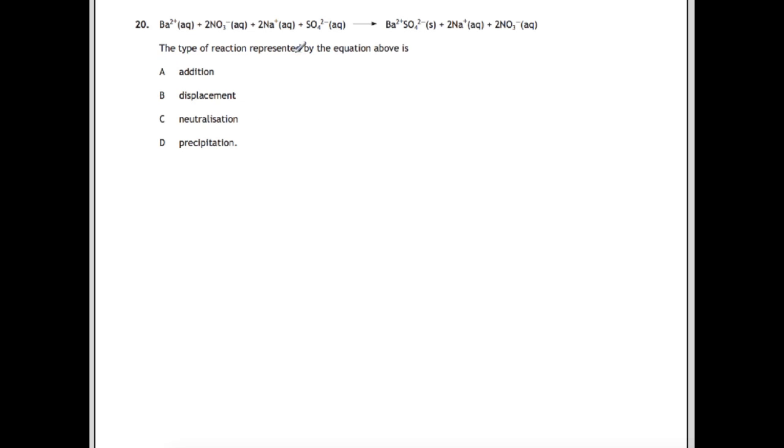Question 20, the type of reaction represented by the equation above is. First of all, you need to know the definitions for each of these. An addition reaction is one where you would be adding something onto a double bond. We don't have any double bonds here. Displacement is where you would put a metal into a solution of a less reactive metal and you would displace that out of the solution. We don't have that happening here either. Neutralization is where you would take an acid and a base and you produce a salt and water. We're not producing a salt and water here. Which leaves us with precipitation as our answer. The definition of precipitation is where we take two aqueous solutions. When we mix them together, we produce a solid product. We have precipitation as we have solid barium sulfate being produced here.